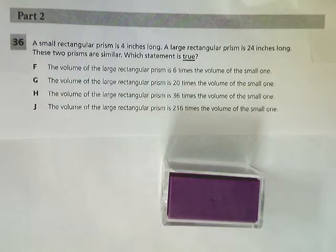Seventh grade TCAP practice test, math section question number 36. A small rectangular prism is four inches long. A large rectangular prism is 24 inches long. The two prisms are similar. Which statement is true?